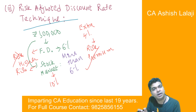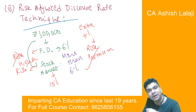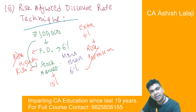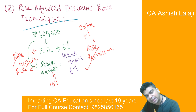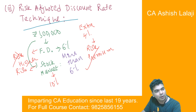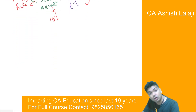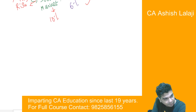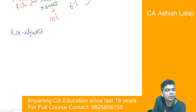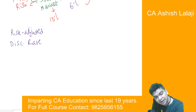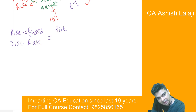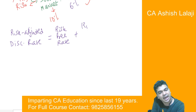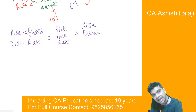A project that has lower risk will have a lower risk premium and hence a lower discount rate. Once the discount rate has been adjusted, then it is a regular calculation of NPV, just as we were doing NPV analysis till now. In this technique, I will work out a risk-adjusted discount rate by taking the risk-free rate and adding to that the risk premium.